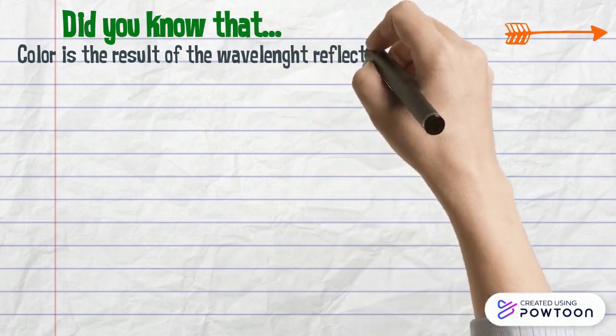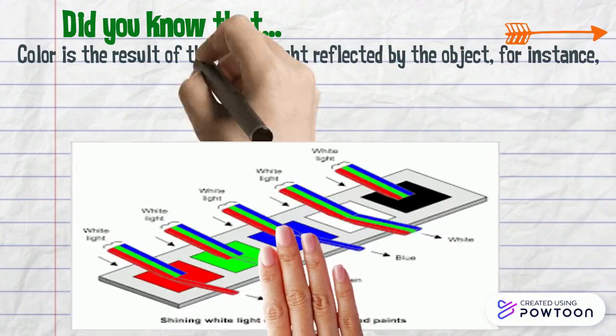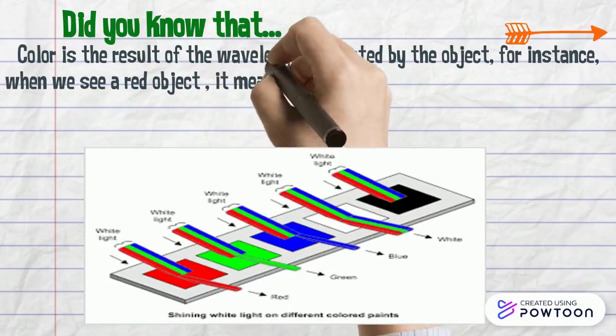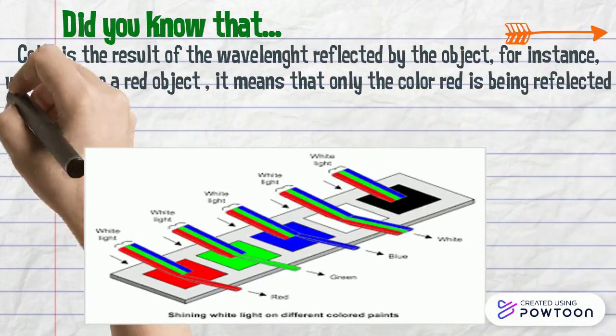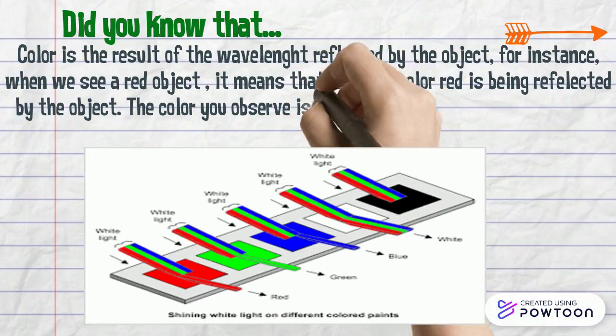Color is the result of the wavelength reflected by the object. For instance, when we see a red object, it means that the only color red is being reflected by the object.